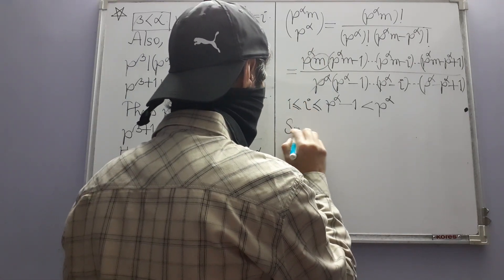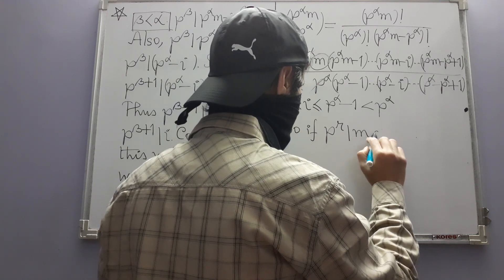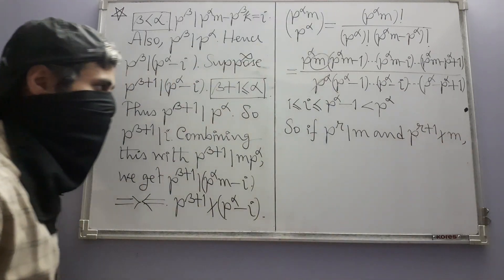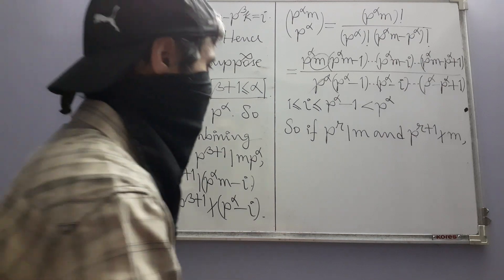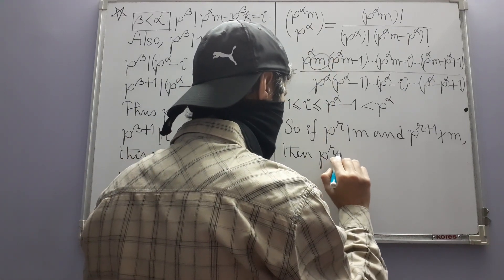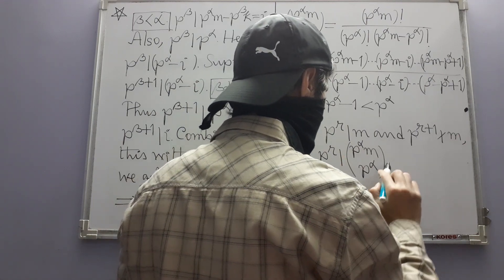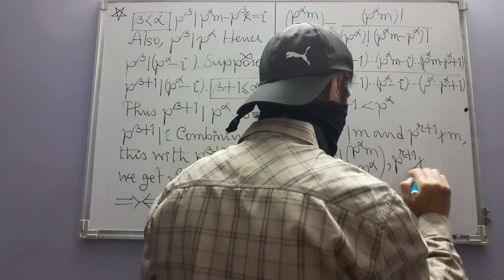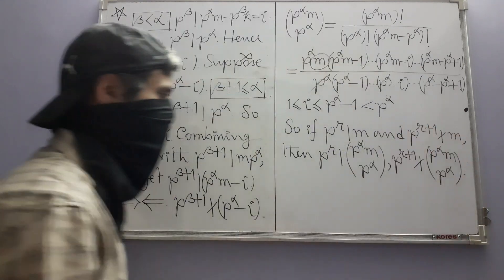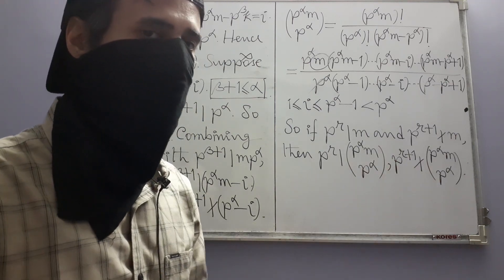So if p^r divides m and p^(r+1) does not divide m — that is, p^r is the largest power of p dividing m — then that is also the case for the binomial coefficient C(p^α·m, p^α). Armed with this knowledge, we now start the actual proof.